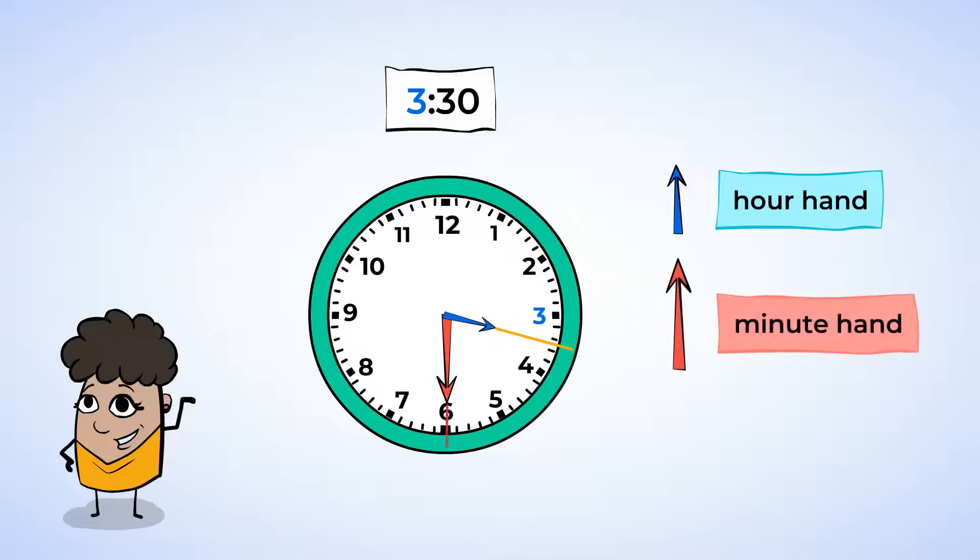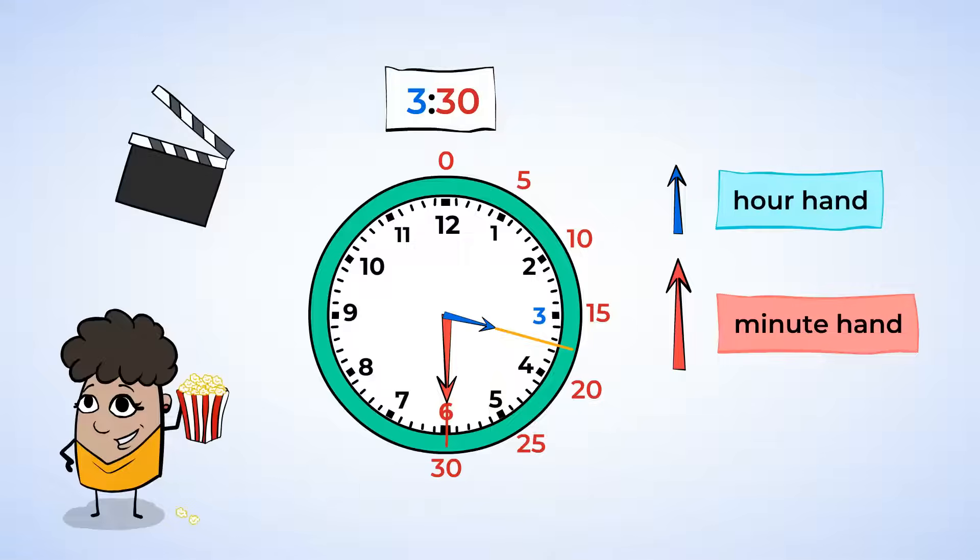The long hand is the minute hand. And for the time 3:30, the minutes are 30. On the clock, 6 represents 30 minutes. So the long hand points to the 6. When the clock looks like this, we know it's 3:30. And it's movie time.